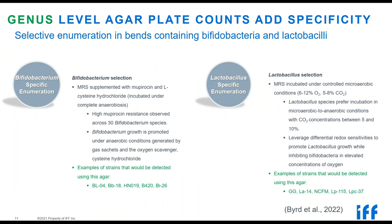Agar techniques also have weaknesses: current methods are only capable of total bacteria or sometimes genus or species-specific counts, with estimated variability between 15 and 35%, which can be even greater across different labs. IFF is working on next-generation enumeration methods with reduced variability and increased specificity. The first is genus-level agar plate counting: Bifidobacterium selection uses MRS supplemented with mupirocin and cysteine. Examples of strains include BLO4, BB18, HNO9, B420, and BI26 — though if mixed, you'd only get one combined Bifidobacterium count.